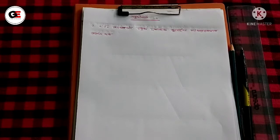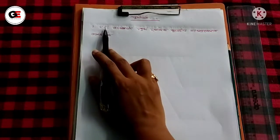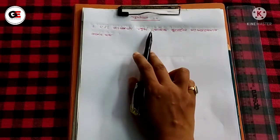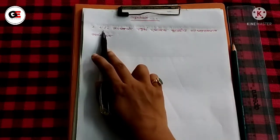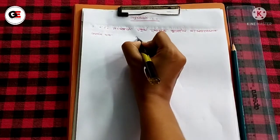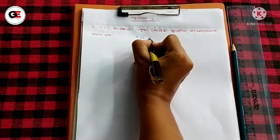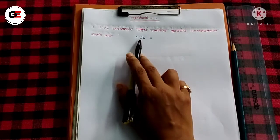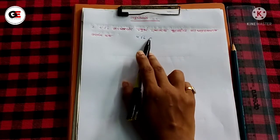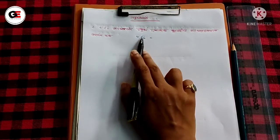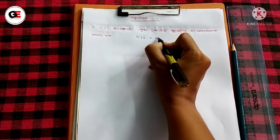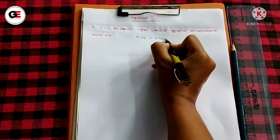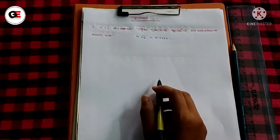Today I am going to discuss 1.4, question 2. Question 2 says: represent 4.26 bar on the number line.